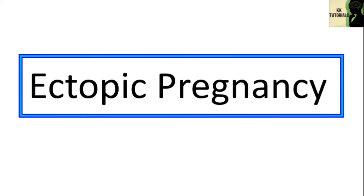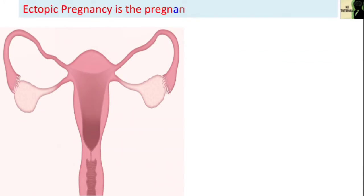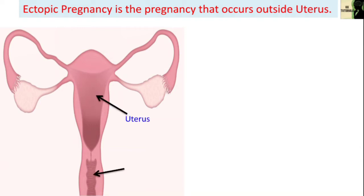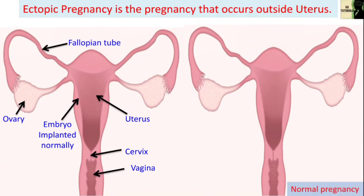In this video we're going to talk about ectopic pregnancy. Ectopic pregnancy is an abnormal pregnancy which occurs outside the uterus. The female reproductive system consists of uterus, vagina, cervix, a pair of fallopian tubes, and a pair of ovaries. In normal pregnancy, the fertilized egg implants in the uterine lining.